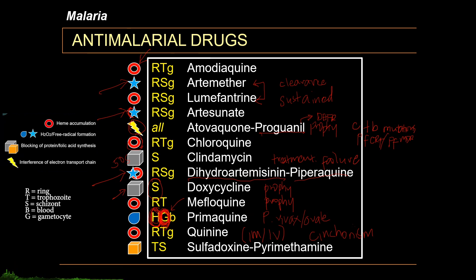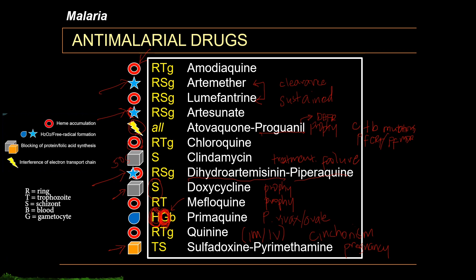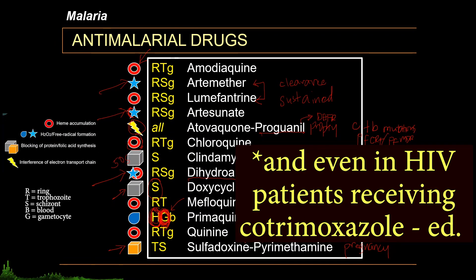Sulfadoxine-pyrimethamine combination drug is used in the intermittent preventive treatment of first and second trimester pregnant women, serving as an alternative drug in the early stages of pregnancy. It can also be used in the treatment of uncomplicated malaria as a second-line drug. Its mechanism of action is inhibition of the folic acid synthesis pathway, similar to cotrimoxazole. It is primarily effective against late trophozoite or schizont stages, generally well tolerated, and its main contraindication is megaloblastic anemia, usually seen in premature infants or those less than 2 months old, and patients receiving cotrimoxazole.